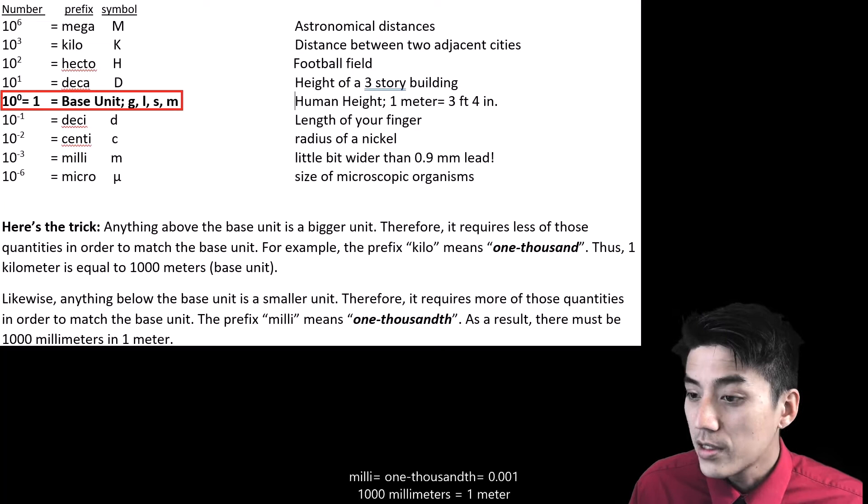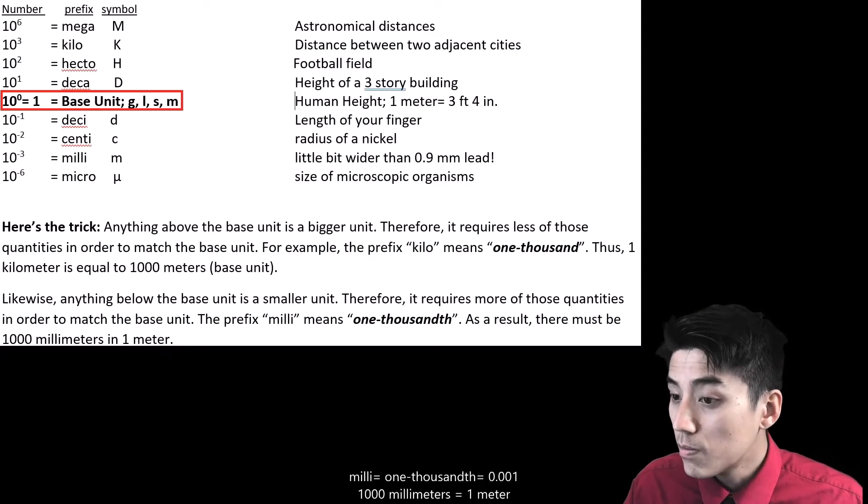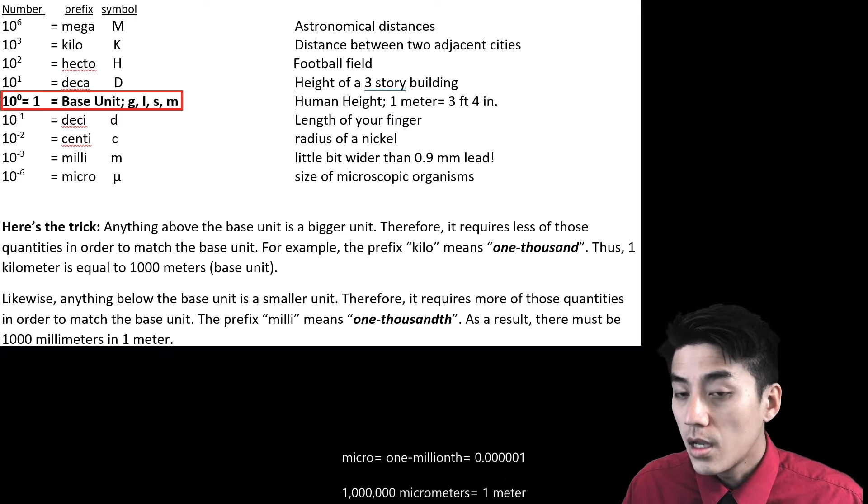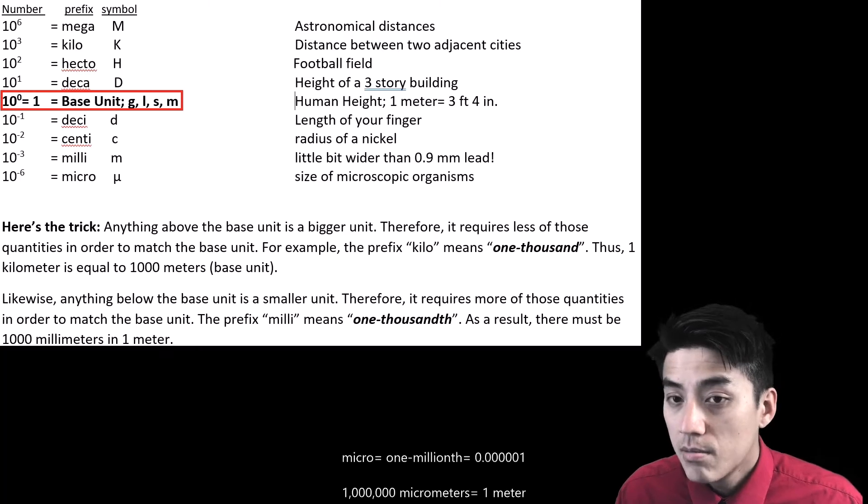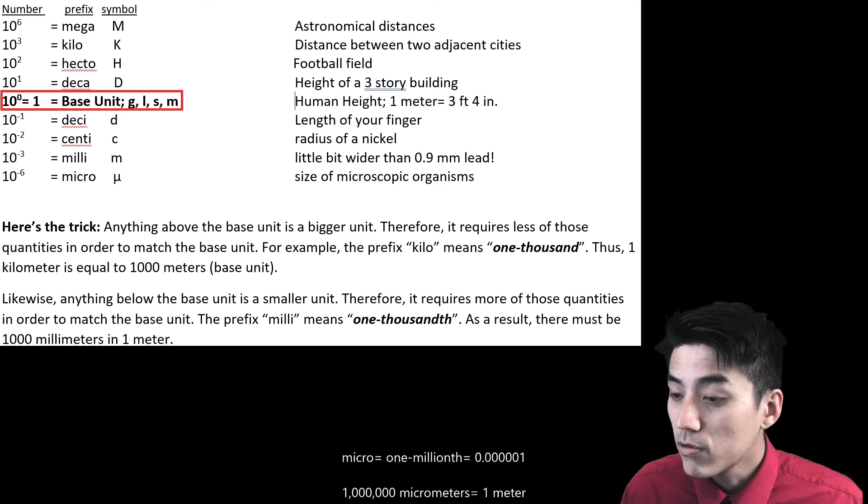Milli means 1,000th. If you go below the base unit, you're getting smaller and smaller. So you need more of these units to match one base unit. You need 1,000 millimeters to match one meter. As you approach micro, micro has a weird Greek symbol. You can see it there on the screen. Micro means 1,000,000th. So you need 1,000,000 micrometers for one meter.